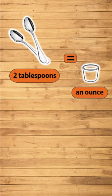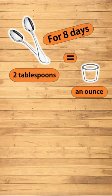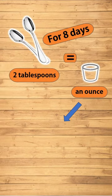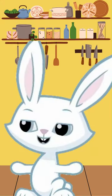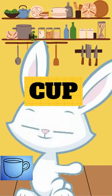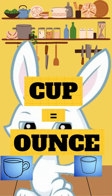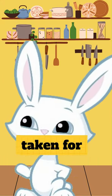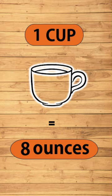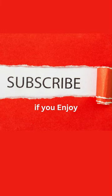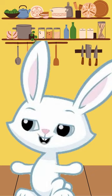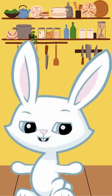Again, two tablespoons equals one ounce. When taken for eight straight days, you have drank a cup of cough syrup. Now you'll always remember that a cup is an ounce of cough syrup taken for eight days. One cup is eight ounces in total. How simple is that? Subscribe for more mind tips and tricks.